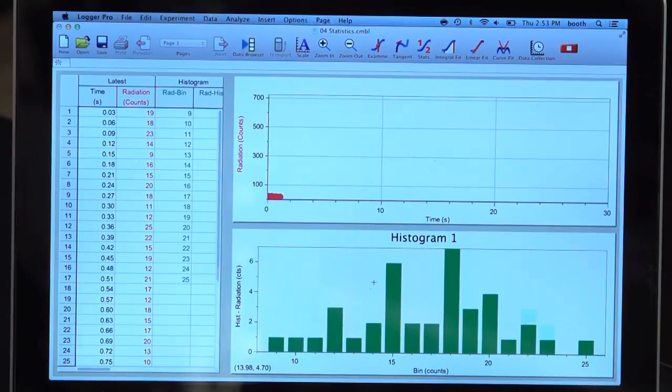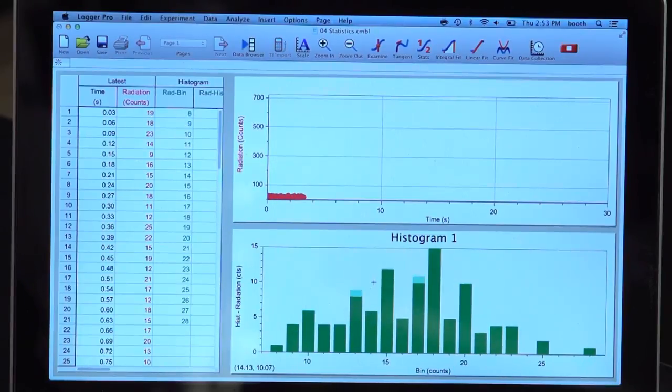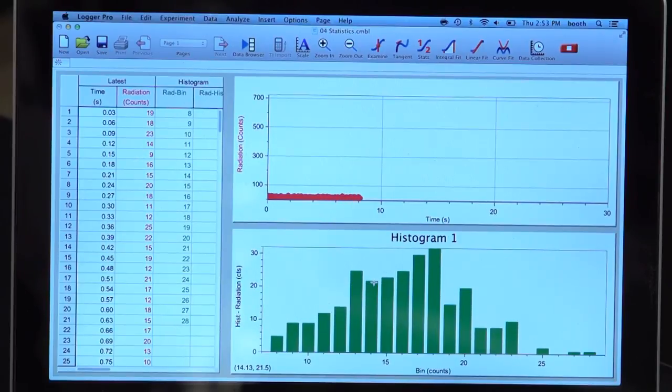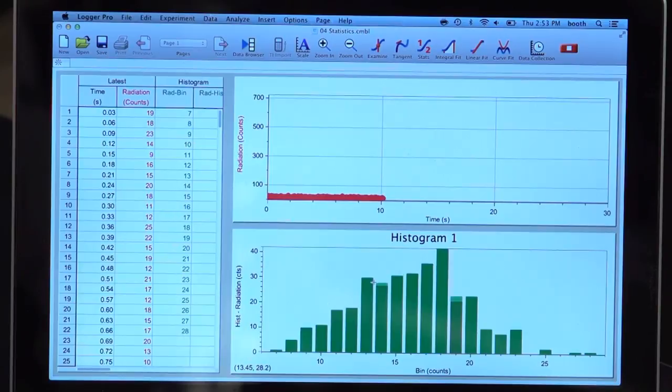So, now I'll collect data using this longer time interval, with the higher average number of counts per time interval. The distribution of the counts per time interval follows a Gaussian distribution. So, that's all there is to studying counting statistics using a Vernier Radiation Monitor and Logger Pro.